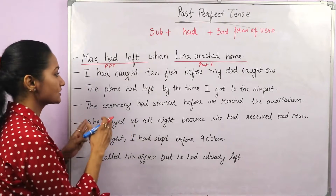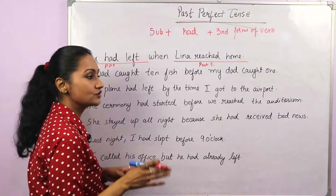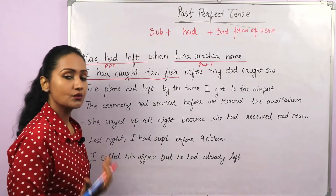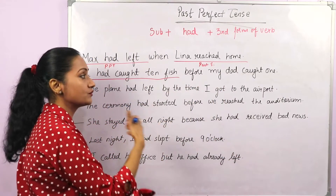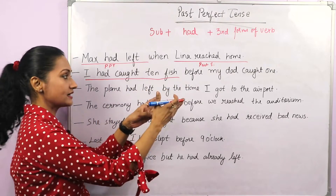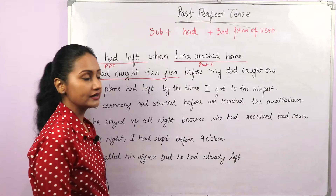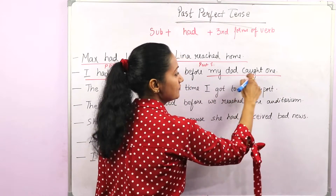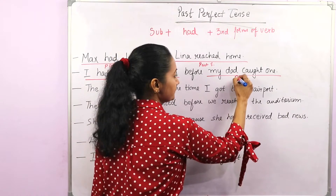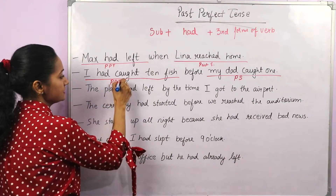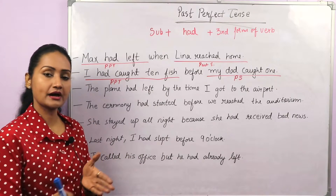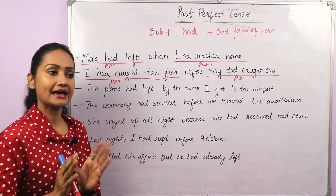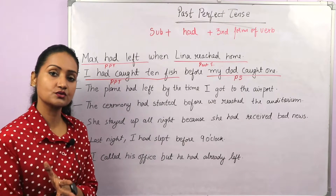Next: 'I had caught 10 fish before my dad caught one.' The first action is 'I had caught 10 fish' — past perfect. Then 'my dad caught one' happened later — that's subject plus second form of the verb, which is past simple. Both actions took place in the past, but the earlier action uses past perfect and the later action uses past simple.